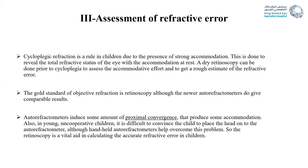Assessment of refractive error: cycloplegic refraction must be the rule due to the presence of strong accommodation. It will reveal the refractive status of the eye with accommodation at rest. We can do dry retinoscopy to give a rough idea about the refractive error and to assess the accommodative effort. The gold standard is retinoscopy for refraction. A new autorefractometer can give comparable results, but it can induce proximal convergence that produces accommodation, and it is difficult to use with an uncooperative child. The hand-held autorefractometer can help, but retinoscopy remains the vital item for accurate refractive error measurement in children.